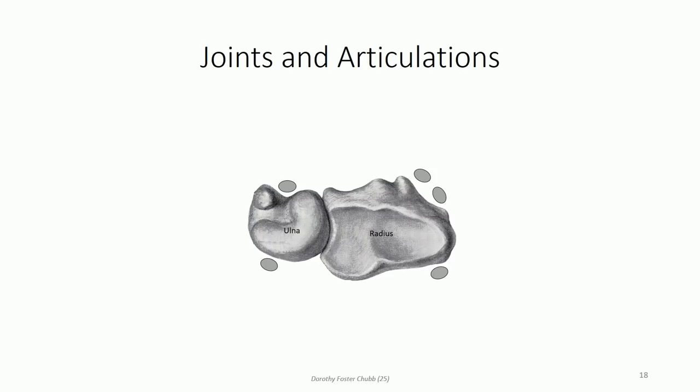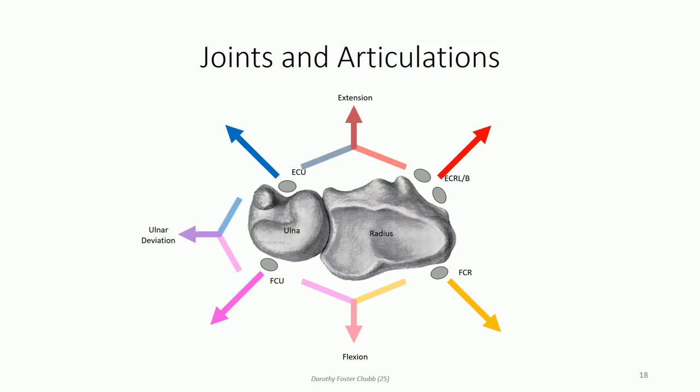In the previous lesson, we discussed the roles the various muscles play in radial and ulnar deviation. The image on the left provides a visual representation for the purpose of understanding. A combination of flexor muscle contraction produces flexion and extensor muscle contraction produces extension. Conversely, contraction of flexor and extensor carpi ulnaris muscles produces ulnar deviation, or adduction, while contraction of flexor and extensor carpi radialis produces radial deviation, or abduction.